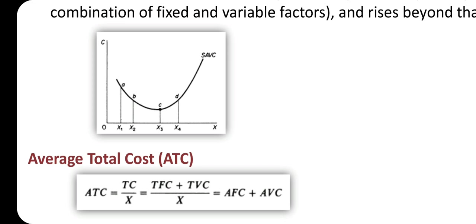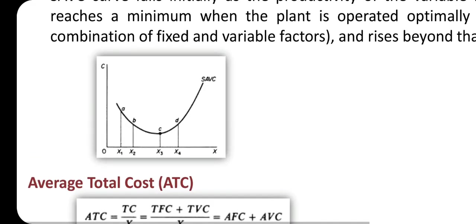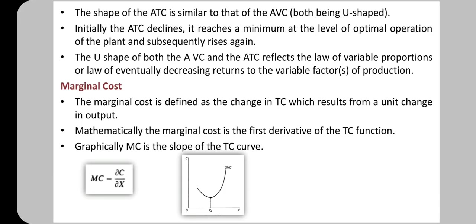Average total cost (ATC) is total cost divided by X, which equals AFC plus AVC. The shape of the ATC is similar to that of the AVC — both being U-shaped. Initially the ATC declines to a minimum point at the level of optimal operation of the plant, and subsequently rises again.